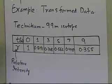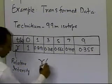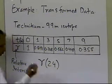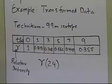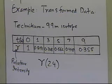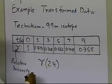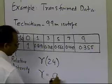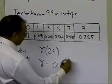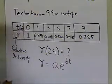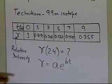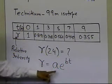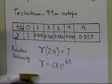Let's go and figure out what the relative intensity is at 24 hours. Does it go down very low so that the patient is not worried about having radioactive material in their body? We are going to use the exponential model to figure out what the relative intensity of the Technetium isotope is at 24 hours, so we're going to use the exponential model to do the regression.